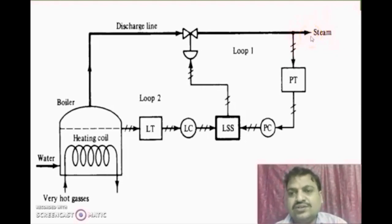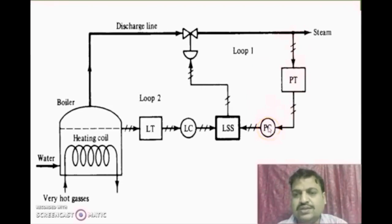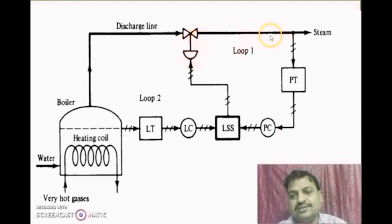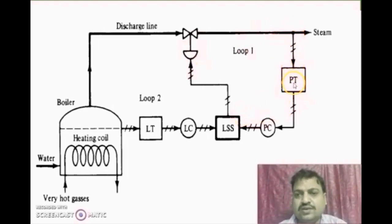Under normal or steady-state conditions, we are getting the required value. But if a disturbance occurs in the system, this value will deviate. We are continuously measuring the pressure, so if the value deviates from the required value of 10, it gives information to the pressure controller. The pressure controller will change the outlet flow rate — for example, if we want 10 but are getting 8, we decrease the outlet value so that pressure increases. In this way, by operating this valve, we can change the pressure or flow rate of the steam using an ordinary feedback loop.